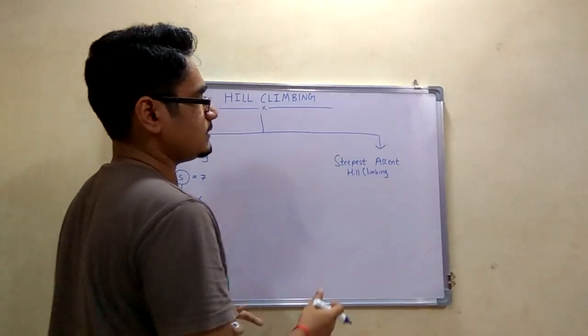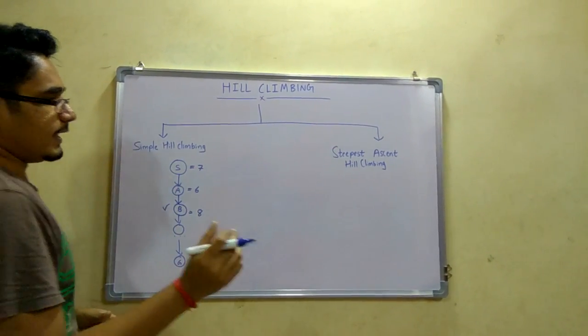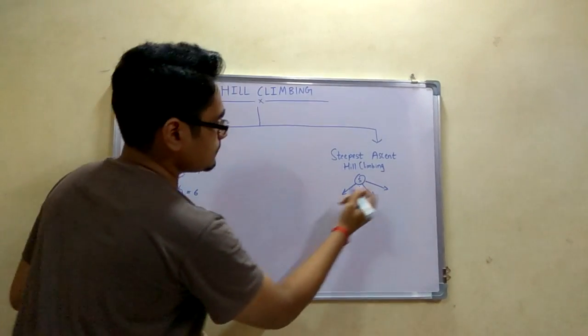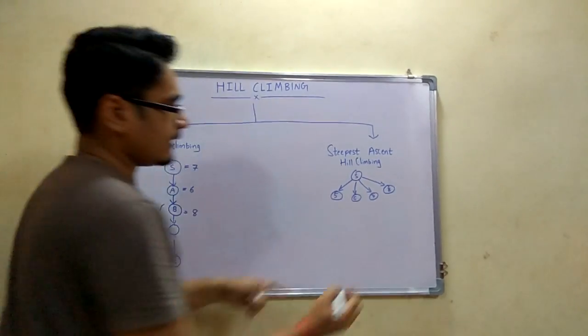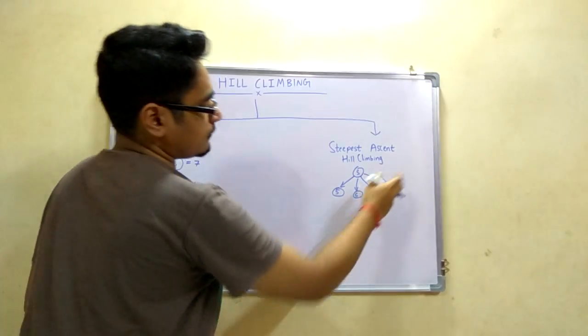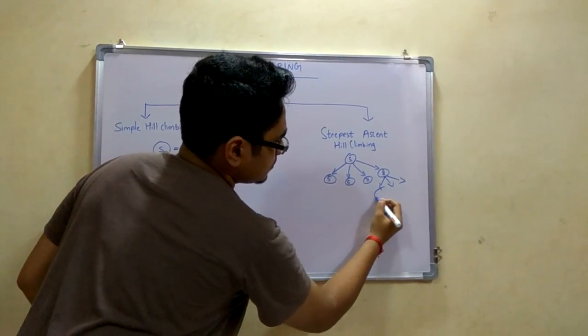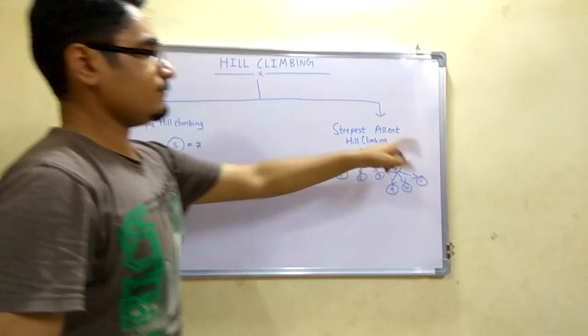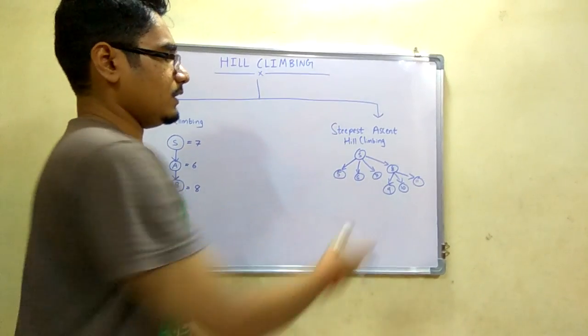Next is steepest ascent hill climbing. Instead of producing one successor at a time, this produces multiple successors at one instant. S produces 5, 6, 7, and 8 at one time and selects the best successor. The best from this is 8, which produces its further successors like 9, 10, and 11, and continues traversing.